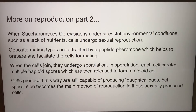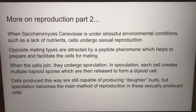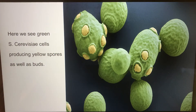When Saccharomyces cerevisiae is under stressful environmental conditions such as a lack of nutrients, cells undergo sexual reproduction. Opposite mating types are attracted by a peptide pheromone, which helps prepare and facilitate the cells for mating. When the cells join, they undergo sporulation — each cell creates multiple haploid spores, which are then released to form a diploid cell. Cells produced this way are still capable of producing daughter buds, but sporulation becomes the main method of reproduction. Here we see green Saccharomyces cerevisiae cells producing yellow spores as well as buds.